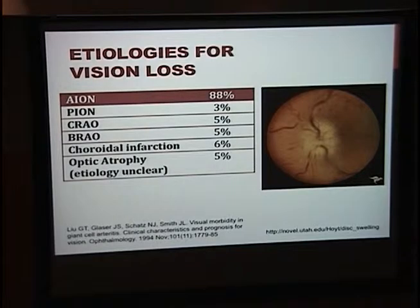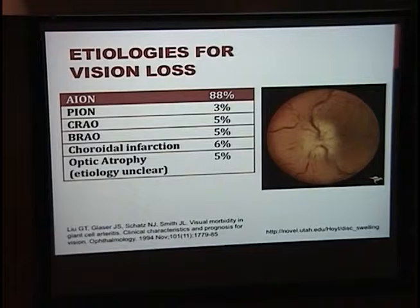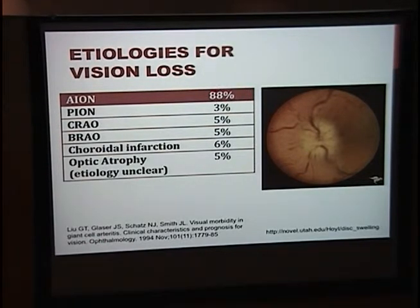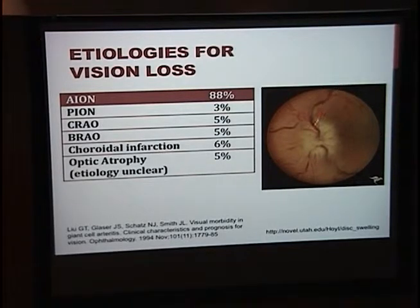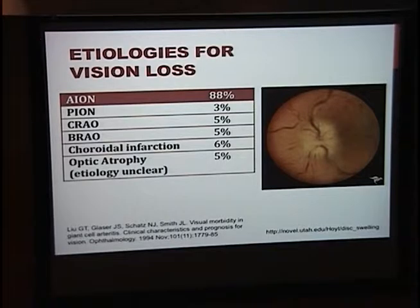Diplopia is a very important question when giant cell arteritis is suspected. In terms of vision loss, by far the most common etiology is anterior ischemic optic neuropathy. In a study of 63–64 eyes, most people had swelling of their optic nerve indicative of anterior ischemic optic neuropathy. Importantly, there's a pallid swelling — not just plain swelling — and about 50% of people with temporal arteritis and anterior ischemic optic neuropathy will have a milky, chalky, white appearance to the nerve.